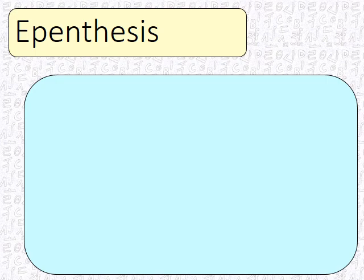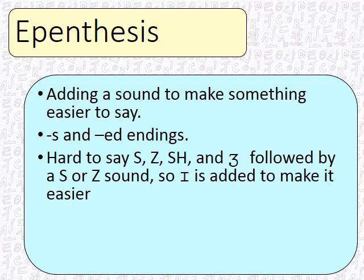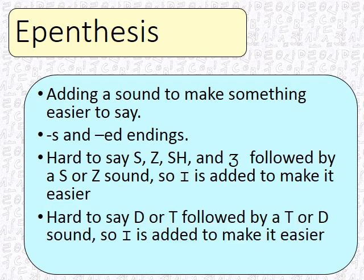The final form of change is called epenthesis — adding a sound to make something easier to say. The S and ED endings are often just S, Z, D, or T at the end of a word. However, it is hard to say S-Z, SH-Z, followed by another S or Z sound. So an I is added to make it easier. When you've got 'fish' followed by S, you can't say 'fishs' — it's hard. So we add the I, and since I has a throat sound, it becomes 'fishes.' It's also hard to say D or T followed by another T or D sound, so the I sound is added once again to make it easier.